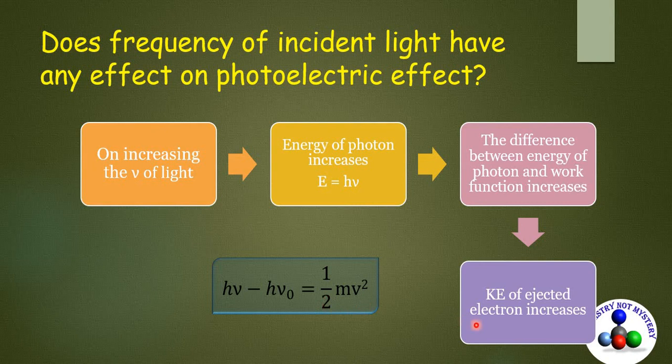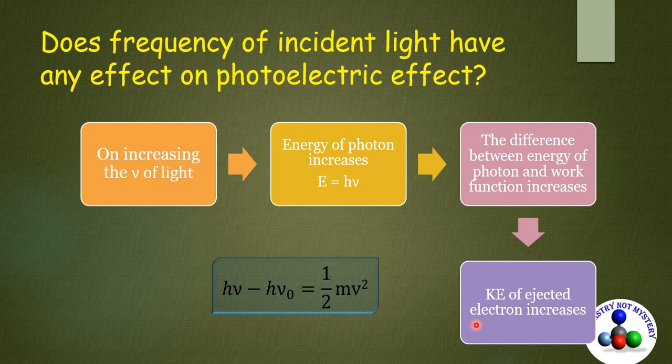You might argue that why high energy photons do not result in an increase in number of ejected electrons? If it has enough energy, why don't it eject more than one electrons? It is so because here we are considering the particle nature of light. And when a particle or photon collides with an electron, because of the impact of collision, that electron gets displaced but not the other one.